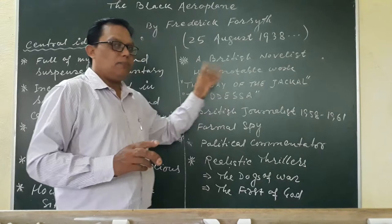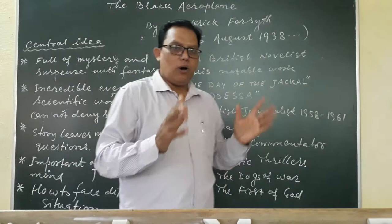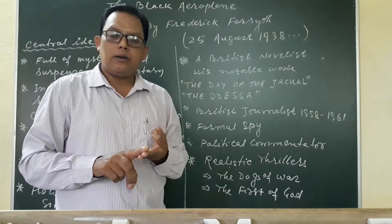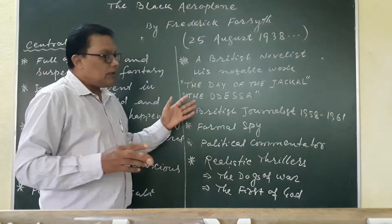The Black Aeroplane is written by Patrick Forsyth. Patrick Forsyth was born on 25th August 1939. He was a British novelist, British spy, occasional political commentator, and journalist.